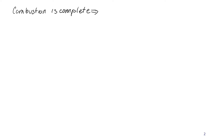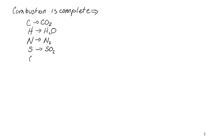First of all, combustion is complete means that we know what the products are going to be. All the carbon in the fuel goes to CO2. All the hydrogen goes to water, H2O. All the nitrogen goes to N2. All the sulfur goes to SO2. And all the oxygen goes to O2. The first step is to find the stoichiometric amount of air required.